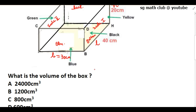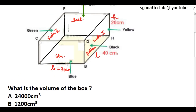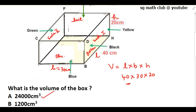The first question is: what is the volume of the box? It is very simple. We know the formula for volume of a cuboid is length × breadth × height. So length is 40, breadth is 30, and height is 20, which gives us 24,000 centimeter cube. So the volume of the box is 24,000 cm³.